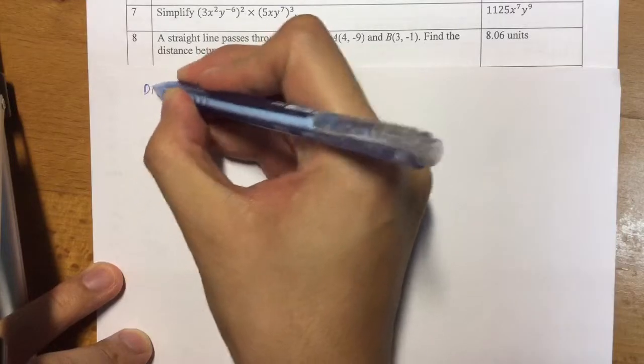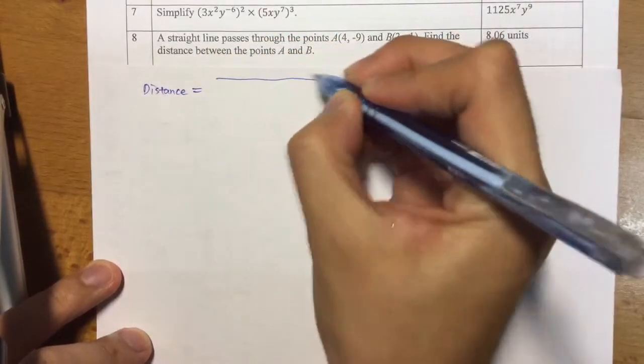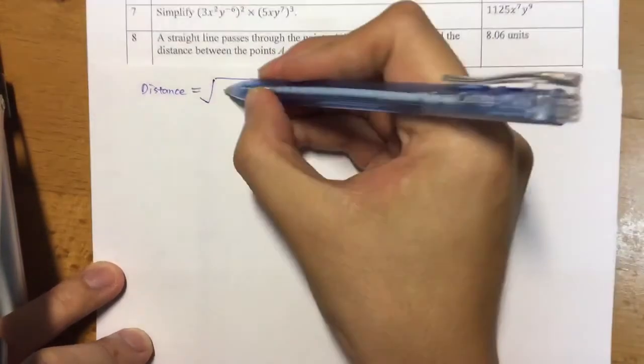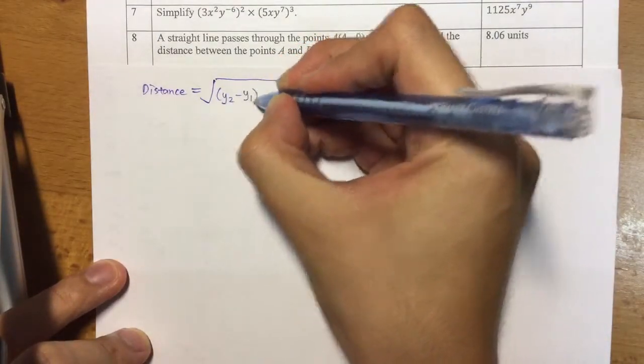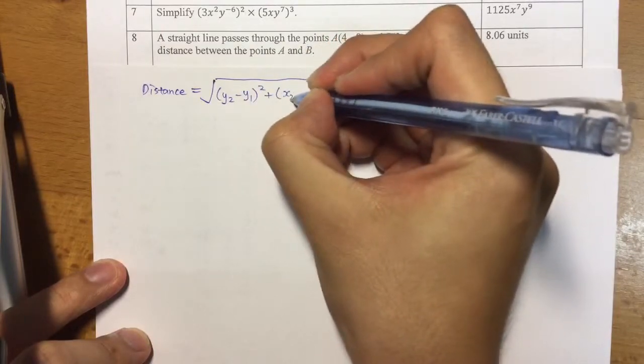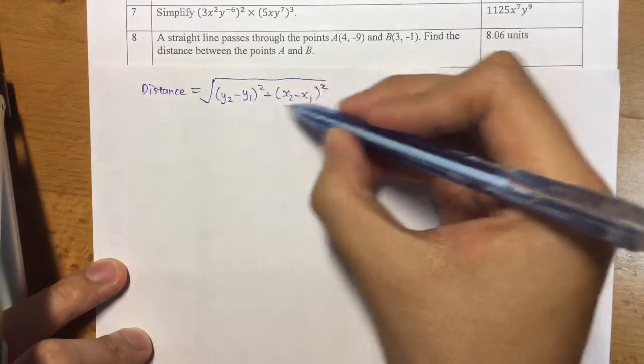The distance formula for coordinate geometry has a square root sign, and you're taking y2 minus y1 squared plus x2 minus x1 squared. So where do these numbers come from?